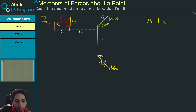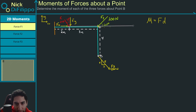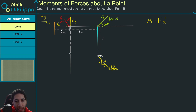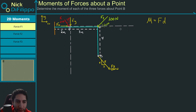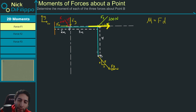We are going to break this up into components and look at F1X first. Because this is still relatively new, I'm going to draw a line that shows the location of where this force points — it extends to infinity. Eventually you won't need to draw the line; you'll be able to do this in your head. I'm going to move this force so it's in line with point B, and when it's in line with point B we have a perpendicular distance D, which is equal to 4.